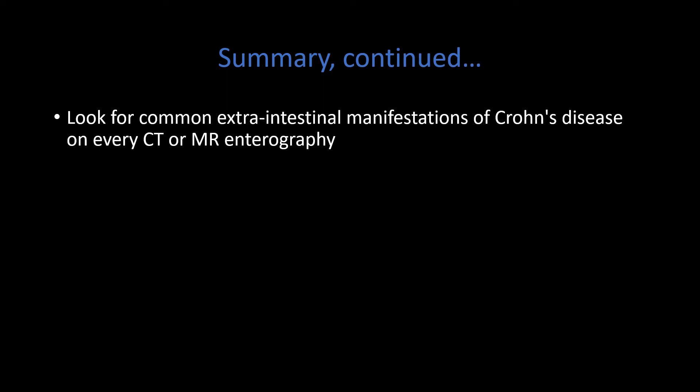The main emphasis of this screencast is to give examples of the common things we see, but most importantly to remind you to have a checklist on every Crohn's patient at the end of your CTE or MRE. Go through that checklist: Are there gallstones? Have they had a cholecystectomy? Do I see any kidney stones? Do I see evidence of pancreatitis or cholangitis? Do I see sacroiliitis or avascular necrosis? If you check off those six boxes on every case, you will improve your sensitivity for extra-intestinal manifestations of Crohn's disease.